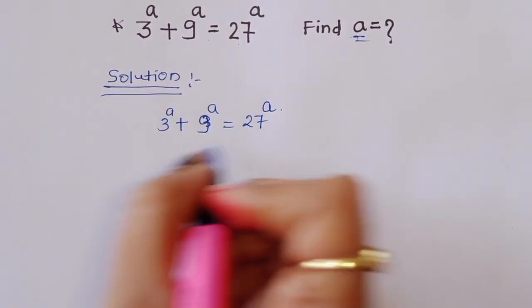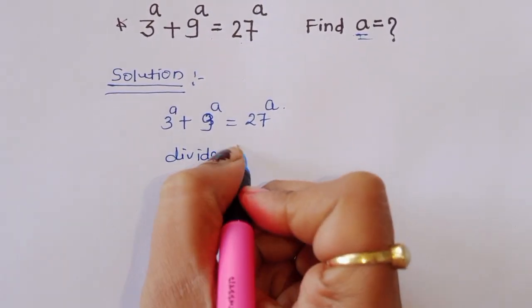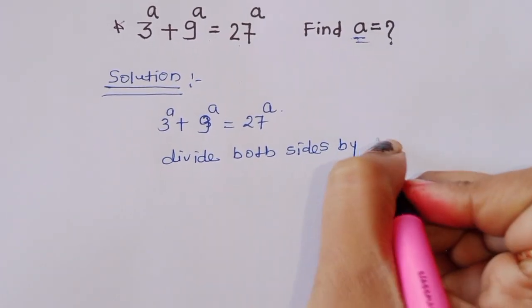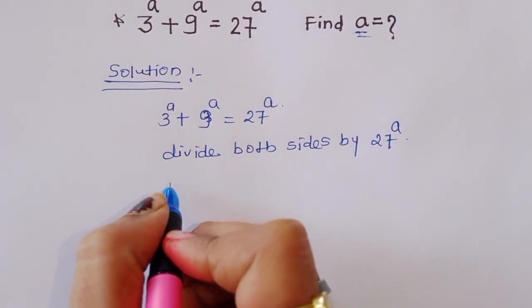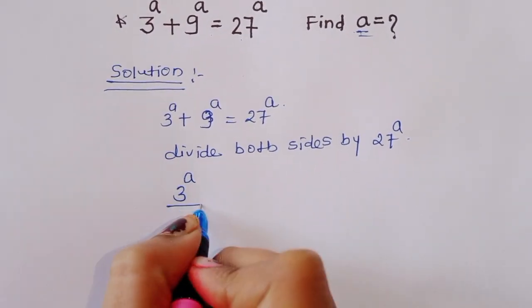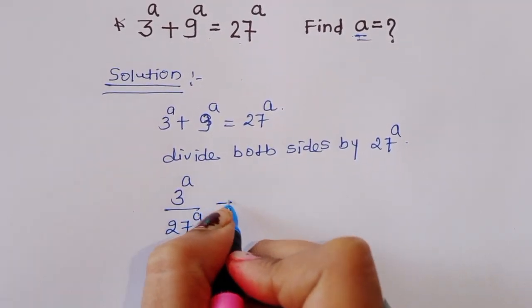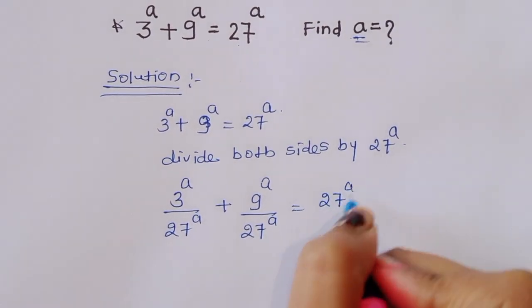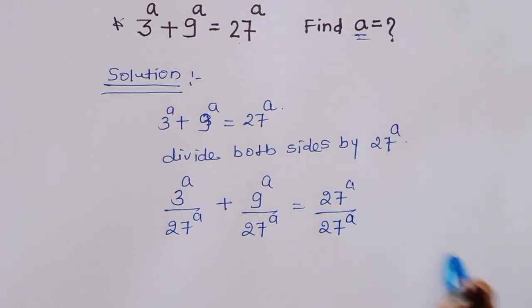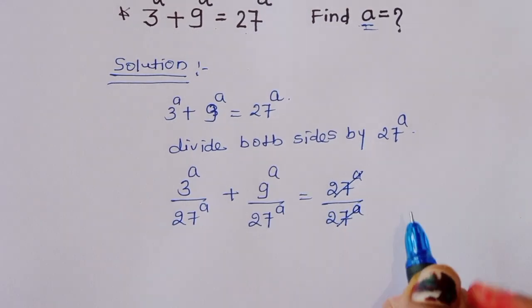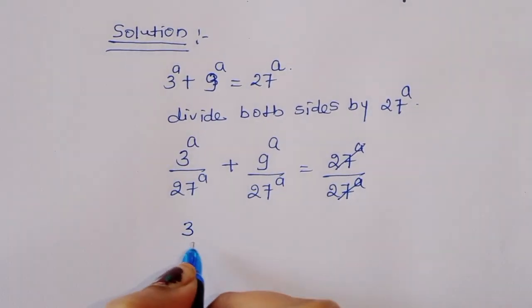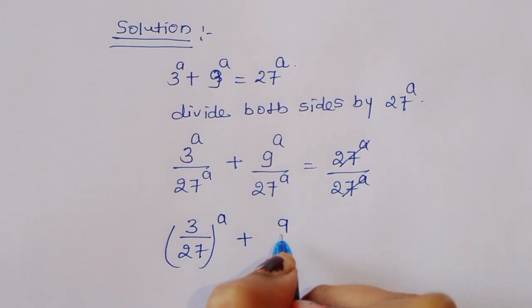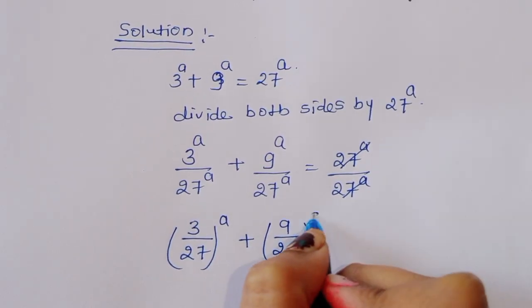We can divide both sides by 27 power a. Then we will get 3 power a over 27 power a plus 9 power a over 27 power a is equal to 27 power a divided by 27 power a. This will cancel. So we can write 3 upon 27 power a plus 9 upon 27 power a is equal to 1.